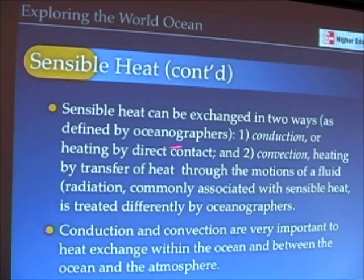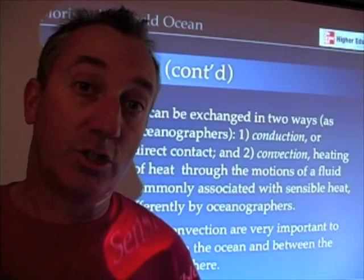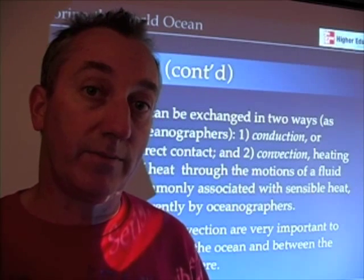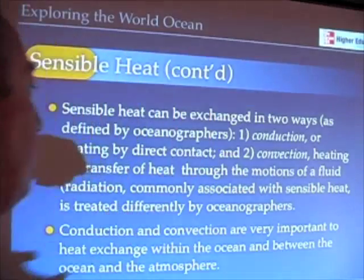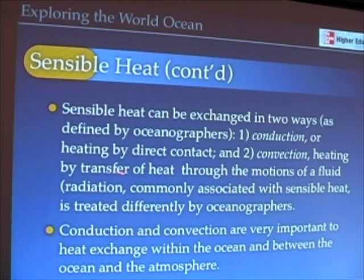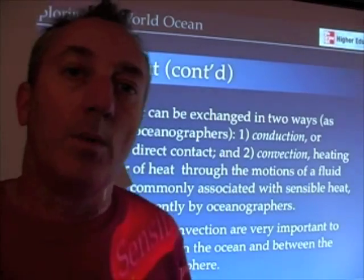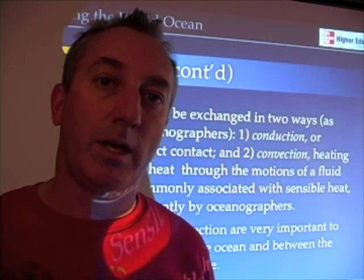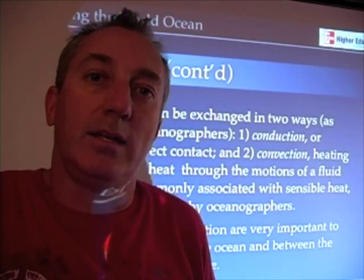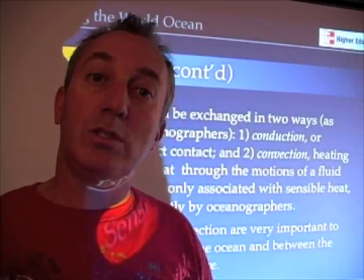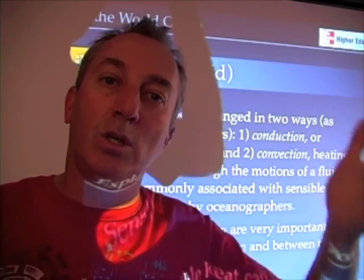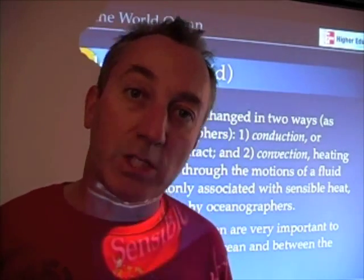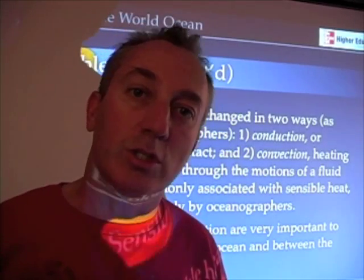Sensible heat can be exchanged in two different ways. The first is conduction — being in physical contact. If I put my finger on a stove, heat is conducting from the stovetop to my finger. The second is convection — if I put my hand above the stove, heat causes motions of the fluid. As the air in contact with the stovetop warms up, that air rises and heats my hand. Convection includes hot air rising, cold air sinking, warm water at the top of the ocean, and cold water sinking to the bottom.